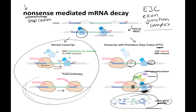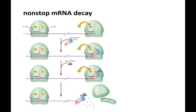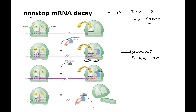That's when you have a premature early stop codon. Non-stop mRNA decay is when you're missing a stop codon — so you can't stop, it's non-stop. The ribosome is then stuck at the poly-A tail because the stop codon triggers release of the ribosome, and if there's no stop codon the ribosome can't be released. Again, a series of proteins come on, release the ribosome, and destroy the mRNA so it's no longer used for translation.